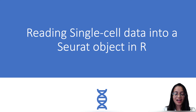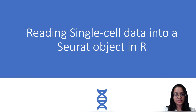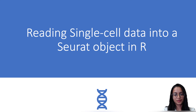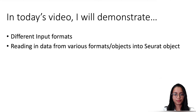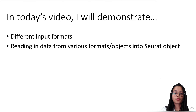Hi guys, welcome back to my channel. In today's video I want to talk about single-cell data — specifically about reading single-cell data into a Seurat object in R. In our previous video we spoke about what single-cell RNA sequencing technology is, how it differs from bulk RNA sequencing, the strengths and weaknesses of each method, common terminologies used when processing single-cell data, and the packages available, including Seurat and the Seurat object.